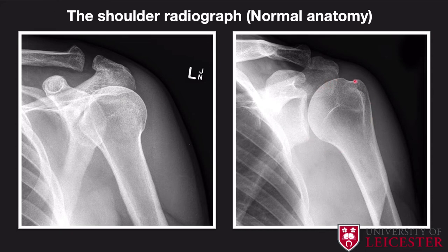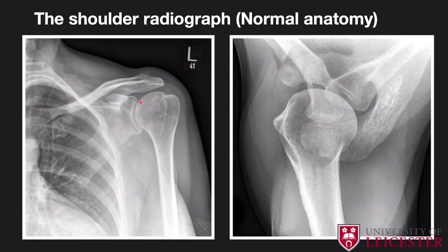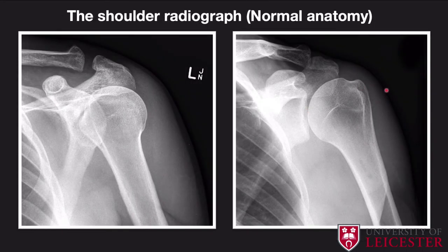Moving on to external rotation: an externally rotated shoulder is quite similar to the normal neutral position. You can see how well-demarcated the greater tuberosity is. These views are useful for looking at the greater tuberosity particularly. Sometimes you can see what we call a Hill-Sachs defect — when you have an anterior shoulder dislocation, the posterolateral humeral head dislocates anteriorly, hits the inferior glenoid, and causes a little depression or indentation. That's what we call a Hill-Sachs defect. If there's not much overlap of the humeral head and glenoid, think about whether the patient has externally rotated and whether assessment of the posterolateral humeral head is possible.